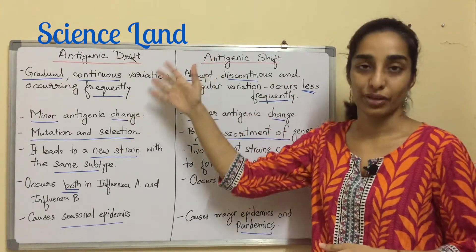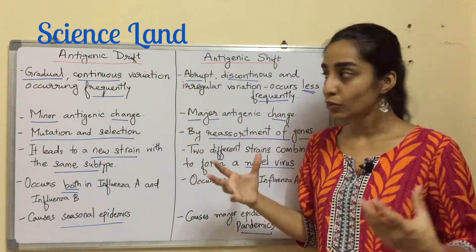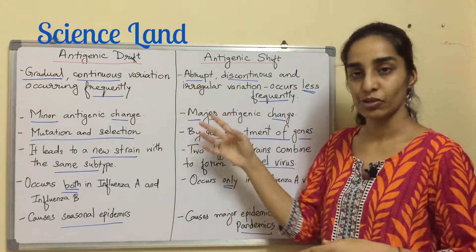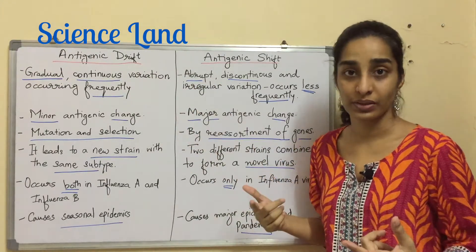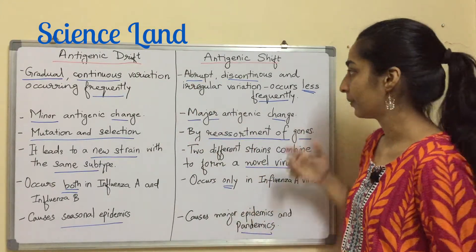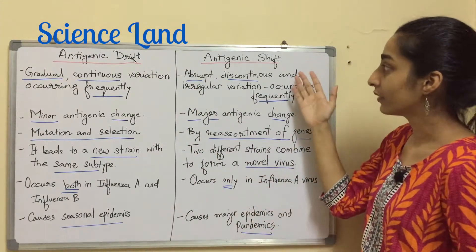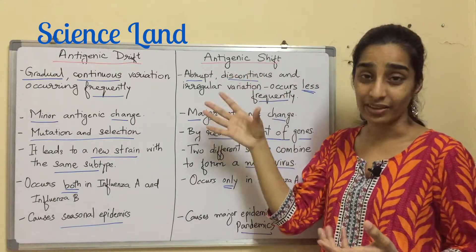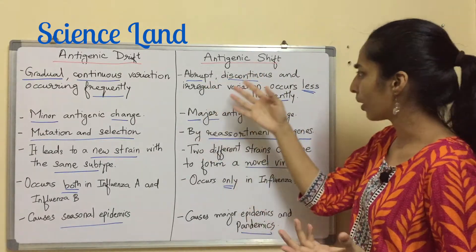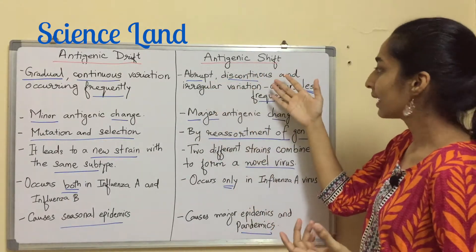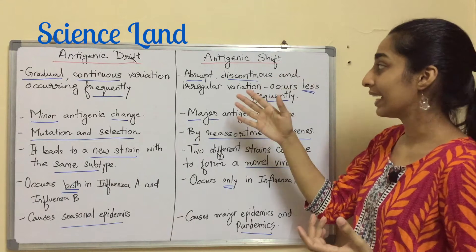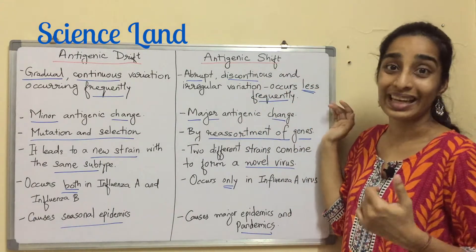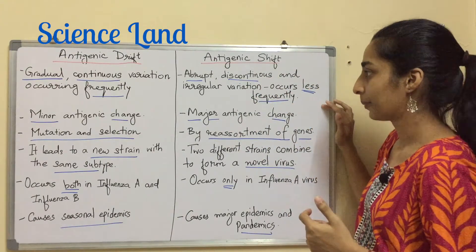Antigenic drift is usually a gradual, continuous variation which occurs frequently. On the other hand, antigenic shift is a sudden or abrupt, discontinuous and irregular variation — it occurs less frequently.